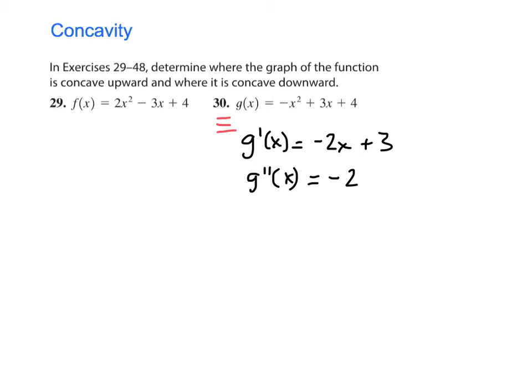Now that's actually pretty cool. I don't even need to make a sign diagram, because if the second derivative is negative at every point in its domain, then that thing is always concave downward.